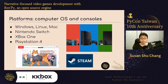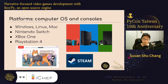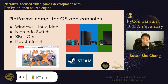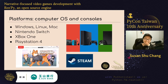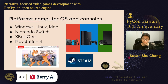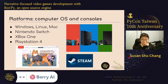首先介绍一下这个 gaming industry。电玩有很多平台，有电脑 Windows、Linux、Mac，也有 console 游戏机：Nintendo Switch、Xbox One 跟 Sony PlayStation 4，我放 PlayStation 4 是因为我游戏发行出来的时候是 PlayStation 4，当然现在已经是 PlayStation 5 了。然后当然也有 Android 或者是 iOS。